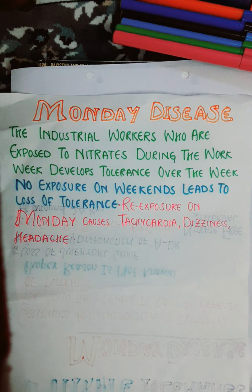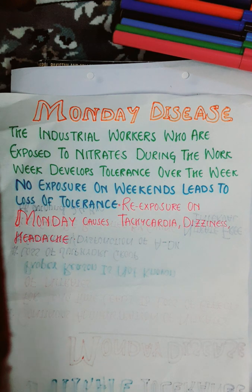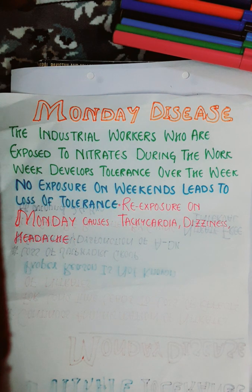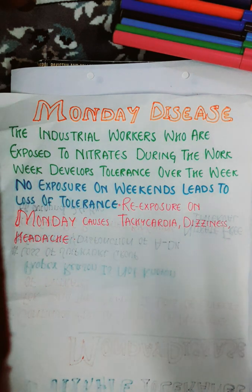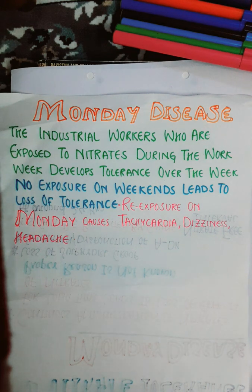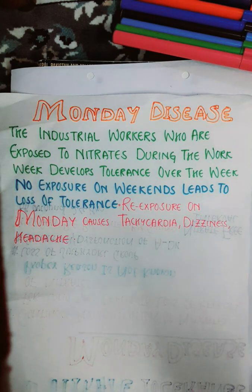On the weekend — that is Sunday — there is around a 24-hour nitrate-free interval. During this time they are not exposed to nitrates at home. As a result, the tolerance they developed throughout the week is lost. When they return on Monday, nitrates start producing their effects and symptoms again because the tolerance built during the week was lost over the weekend.